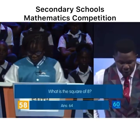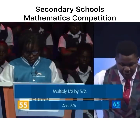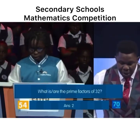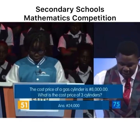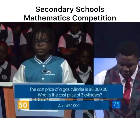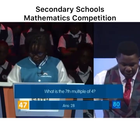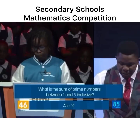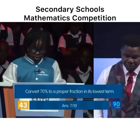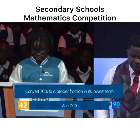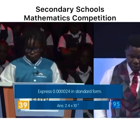What is the... 20, 64. Correct. Multiply 1 over 3 by 5... 5 over 6. Correct. What is or are the prime factors... 2. Correct. The cost price of a gas cylinder is 8,000... 24,000. Correct. What is the... 28. Correct. What is the sum of the prime numbers between 1 and 5... 10. Correct. Convert 70% to a fraction... 7 over 10. Correct. Express 0.000... 2.4 times 10 to the minus 5. Correct.